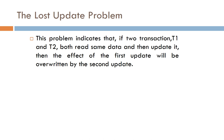The first is the Lost Update Problem. This problem occurs when two transactions T1 and T2 both read the same data and then update it. The effect of the first update is overwritten by the second update. Since both transactions access and update the same value, the update made by the first transaction does not persist after the second transaction updates it.